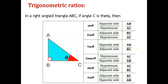AB by BC gives you tan theta. The fourth trigonometric ratio is cosecant theta, which is the reciprocal of sine theta, giving the ratio of hypotenuse to opposite side — AC by AB. The fifth is secant theta, the reciprocal of cos theta, giving the ratio of hypotenuse to adjacent side — AC by BC. The sixth is cot theta, the ratio of adjacent side to opposite side — BC by AB — and it is also the reciprocal of tan theta.